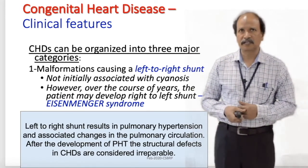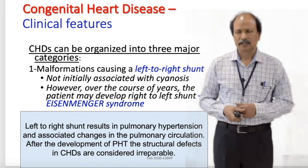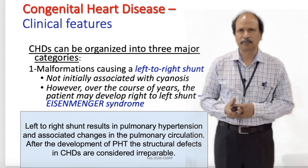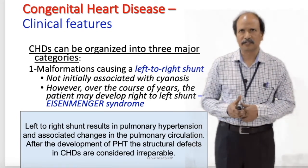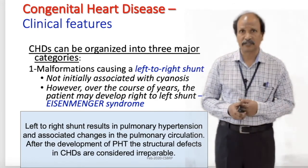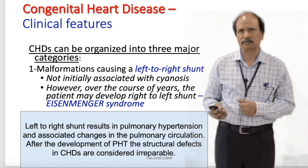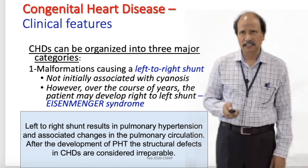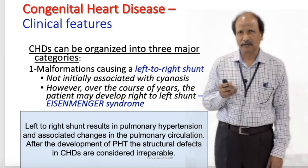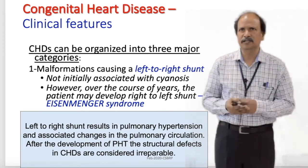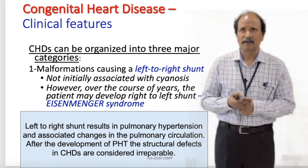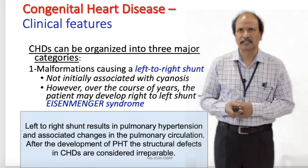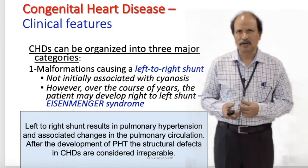Coming to the first segment — malformations causing left to right shunt. If you recollect your physiology, the left side of the heart has higher pressure and the right side has lower pressure. So when there is a shunt between these two — such as ventricular septal defect or atrial septal defect — blood flows from the left side into the right side. So it may not be associated with cyanosis, and this is a very important point.